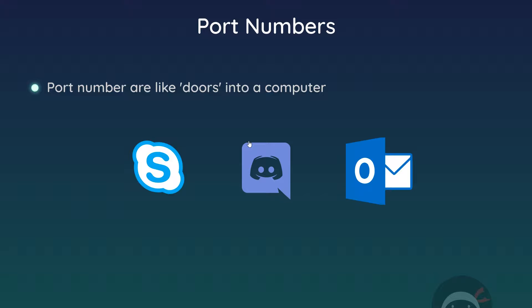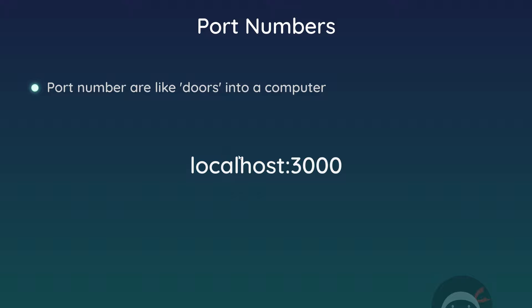You can think of port numbers as doors into your computer through which internet communications reach different programs. Our server needs its own port number. A common one for local web development is 3000. As long as the port you choose doesn't clash with one already being used by another program, it's fine to use. When using localhost, you type the port number after a colon in the address bar so the browser knows which port to connect to.